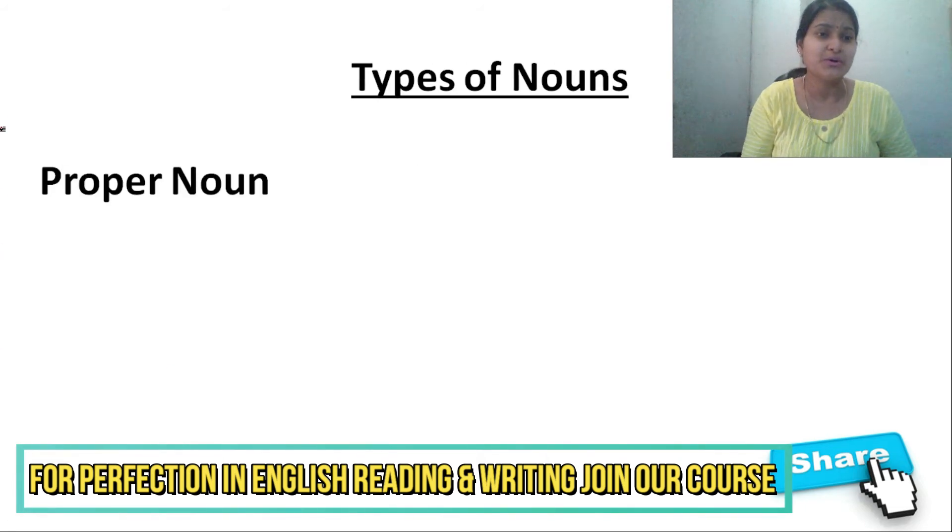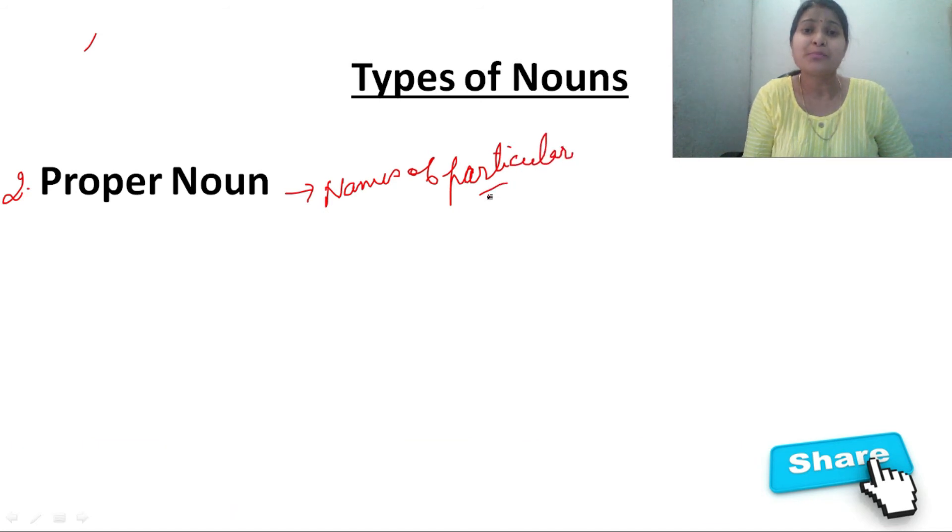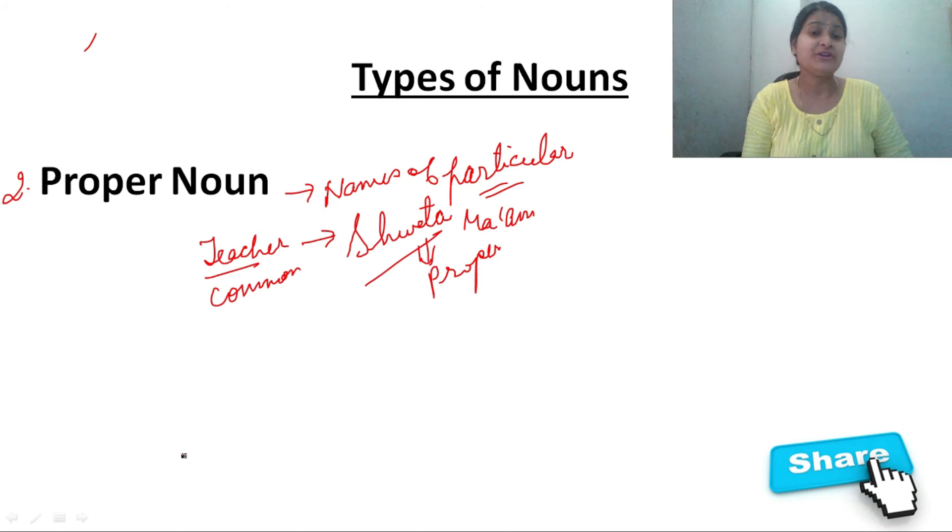Now move to the next section. It is another type of noun, it is proper noun. When the names of a particular person, place, animal, or thing is taken, then we call it proper noun. I told you in the previous example, I have given you the example of teacher. Teacher was common noun, right? I told you, you must be having your math teacher, science teacher, etc. and I am your English teacher. So when you are writing my name, it becomes a proper noun.